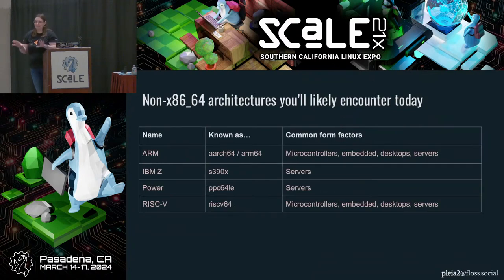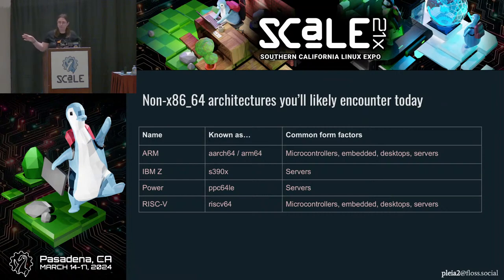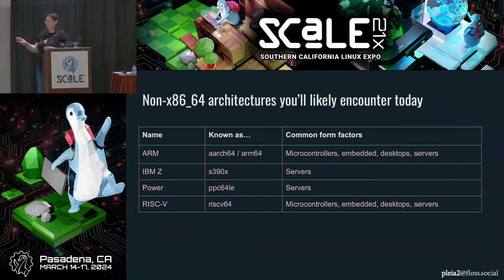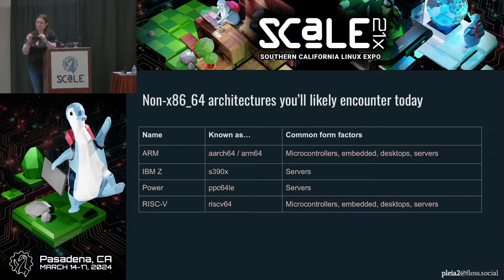Just to level set and get us all on the same page, here are some of the architectures I'm going to focus on. The first one is ARM — I alphabetized them because I'm not playing favorites. I'm also not going to tell you when you should use one architecture versus another. I put what the short code is for each in the binary: so if you see a binary in an open source project, they're probably not going to call it IBM Z, they're going to call it S390X.